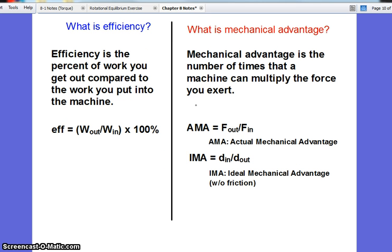There's two values that we calculate with simple machines, the first one being efficiency. Efficiency is always a percent of what you get out to what you put in. When there is no friction, our efficiency is 100%. We get as much work out as we put in. However, with friction we get less work out than we put in. And the efficiency is the ratio of how much we get out to what we put in.